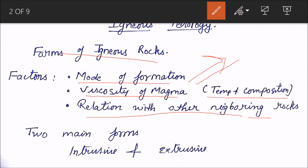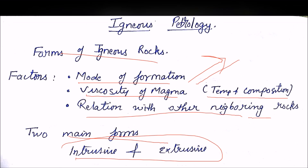Viscosity also depends on the temperature and composition of the magma — acidic versus basic composition. Another factor is the relation with neighboring rocks: the host rock or country rock surrounding the igneous rock will influence how the igneous rock reacts and what form it takes. The two main forms we discuss are intrusive and extrusive rocks.